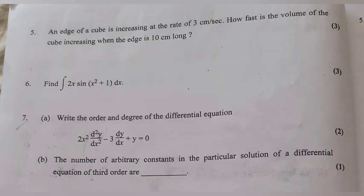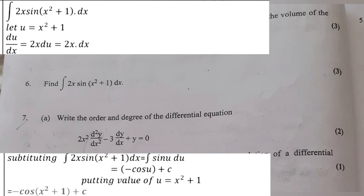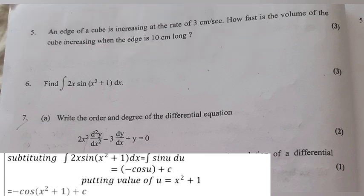Find the integral of 2x·sin(x² + 1) dx. Let u = x² + 1, so du/dx = 2x, meaning du = 2x dx. Substituting: ∫2x·sin(x² + 1) dx = ∫sin(u) du = −cos(u) + C. Putting back u = x² + 1, the answer is −cos(x² + 1) + C.